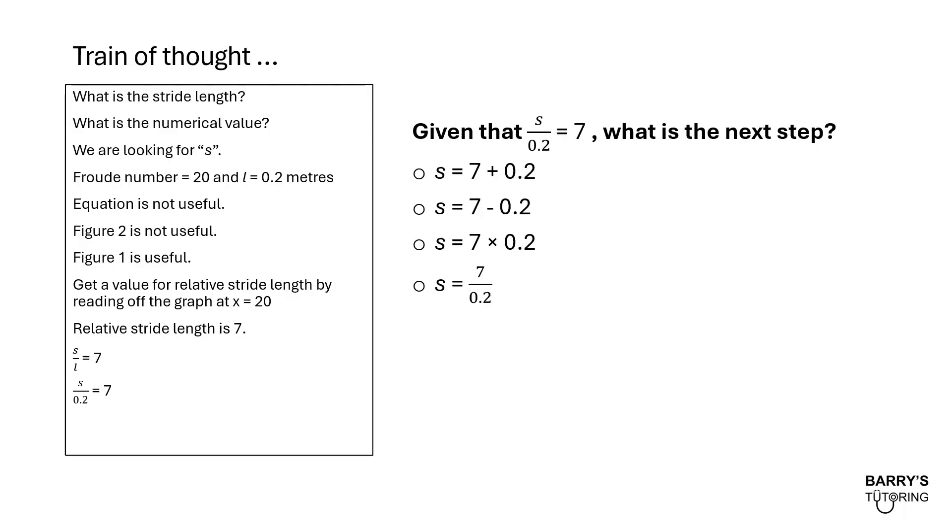So now we have S over 0.2 is equal to 7. What is the next step? So this is where we need to rearrange the equation. Is it S is equal to 7 plus 0.2? S equals to 7 minus 0.2? S equals 7 times 0.2? Or S equals 7 divided by 0.2? What do you guys think? I'll give you a moment to work this out. If you have a pen and paper, you can use that as well. It's S equals to 7 times 0.2, because in the original equation, we have S divided by 0.2. And if we want to rearrange it, we want to do the opposite operation. The opposite of division is multiplication. So that's why you multiply both sides by 0.2, so that you can get S by itself.